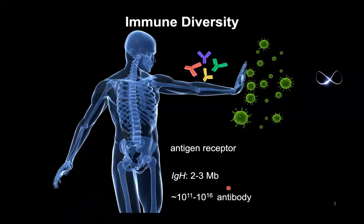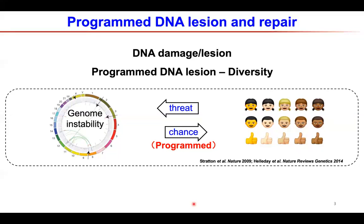The gene regions encoding antigen receptors are very limited. For the antibody heavy chain — immunoglobulin heavy chain genes — it only takes about two or three megabases on the genome, but this DNA can code for 10^11 to 10^16 different kinds of antibodies. How this is achieved was a big question 20 years ago. Scientists found that programmed DNA lesions can generate this diversity. Most people think DNA damage is a threat to genome integrity — hallmarks of cancer genomes include translocations, amplifications, and mutations.